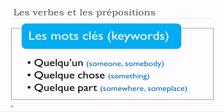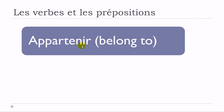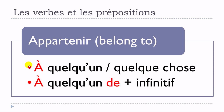Appartenir — the first structure uses the preposition à: appartenir à quelqu'un or quelque chose. The second structure is appartenir à quelqu'un, followed by the preposition de and then the verb at the infinitive form: appartenir à quelqu'un de plus infinitif.